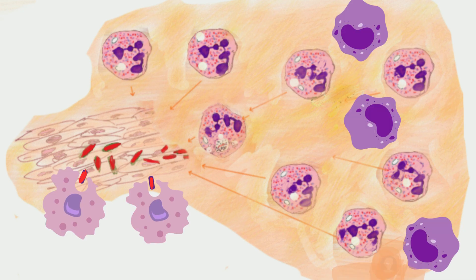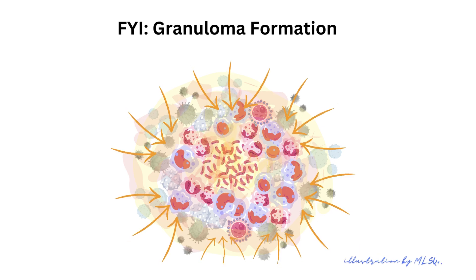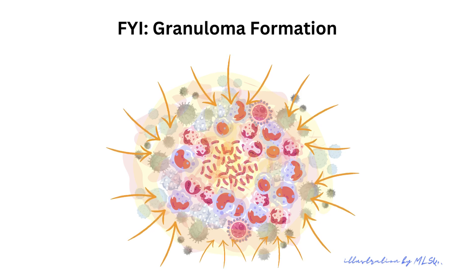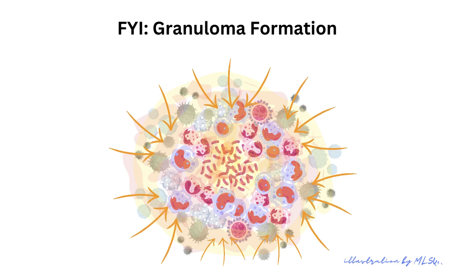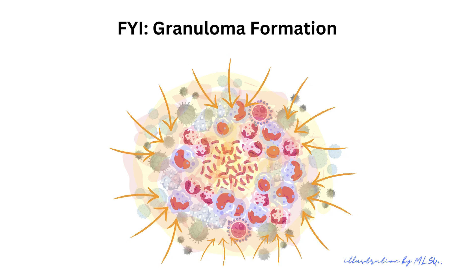Neutrophils, the first responders, and later the macrophages, try their best to phagocytize but they are unable to kill the invading microbe. Granulomas form when immune cells encircle and encapsulate the living pathogens to stop them from spreading, forming a granuloma with central necrosis. We see an aggregation of macrophages and other immune cells surrounding the central necrosis with living microbes, in an attempt to isolate and prevent them from spreading.